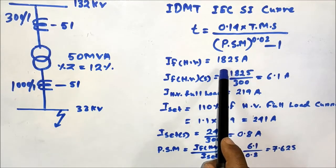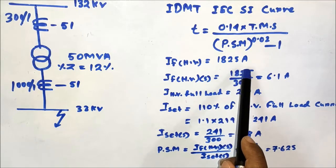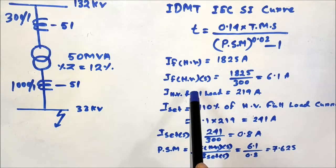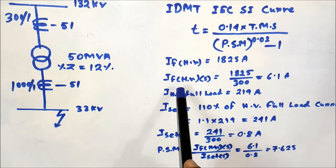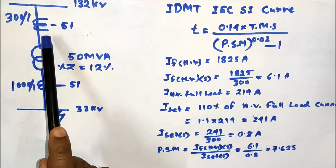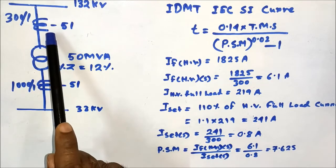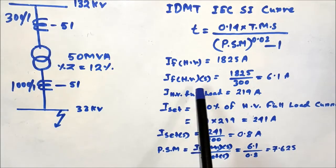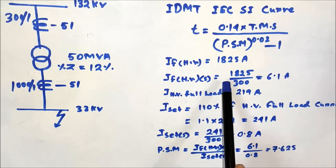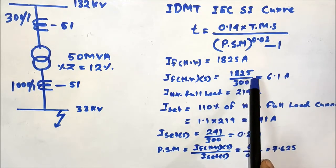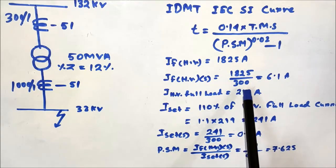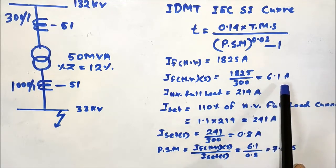The fault current on the HV side is 1825 amperes, or 1.825 kilo-amperes. The CT ratio on the HV side is 300/1. The fault current sensed by the relay, connected on the secondary side of the HV CT, is 1825 divided by 300, which equals 6.1 amperes.